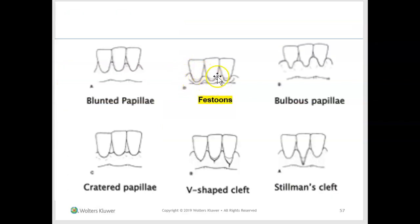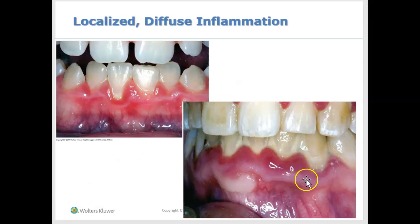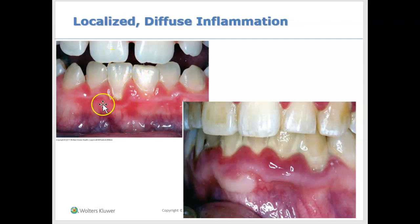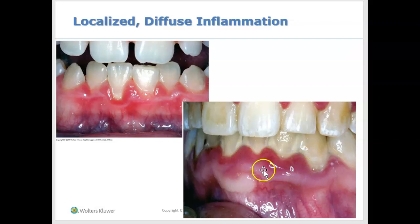Another thing that could happen is festoons. A festoon is a protrusion — an excess of gums protruding on the gingival margin. Some people call it a lifesaver because it looks like a round thing wrapped around the tooth, or even a donut on the lingual side as well. Here's an example: this is severe festooning where you can see inflammation. So the margin here is festooned — I'm looking at the margin, not the papilla. The papilla is bulbous; what I'm looking at right now is the margin, and the margin is festooned.